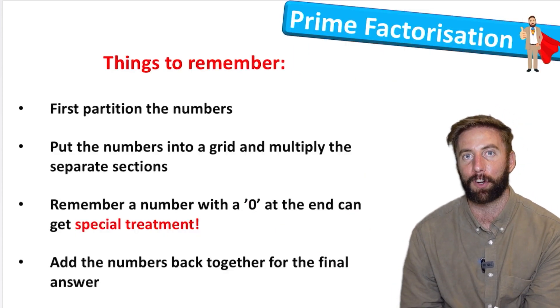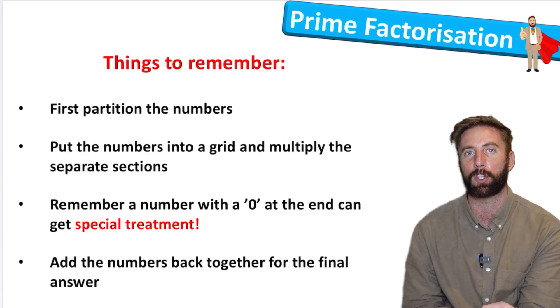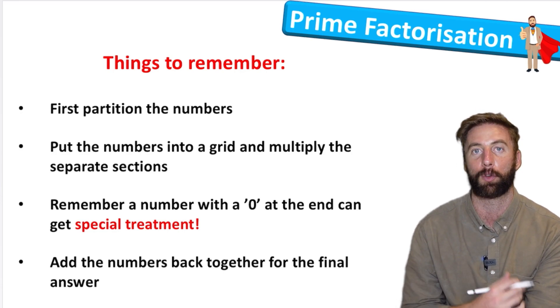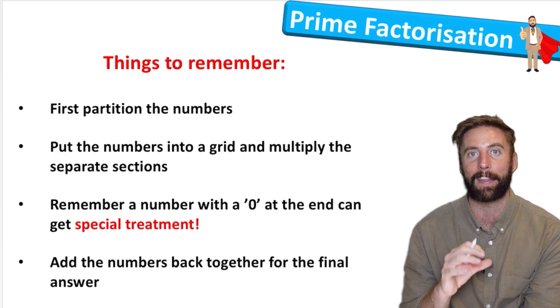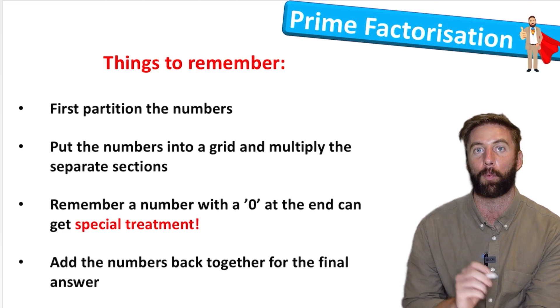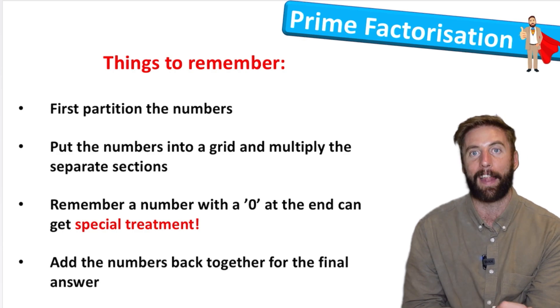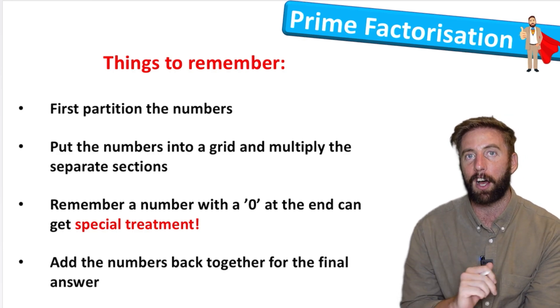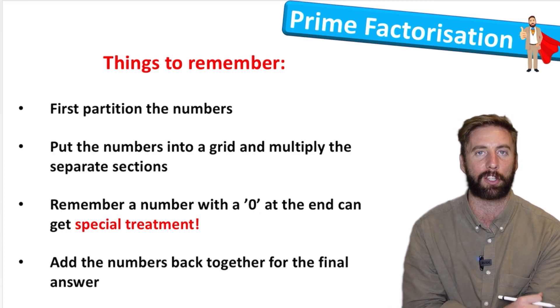Okay, let's just check our things to remember for grid method then. First is to partition the numbers so that we have more manageable chunks to multiply. Then we're going to put the numbers into our grid and multiply the individual parts separately. But remember if a number has a zero at the end we can ignore it for now and then put those zeros back into our answer. And then finally when we've done all the sections, add those bits all back together so that we get our grand total.